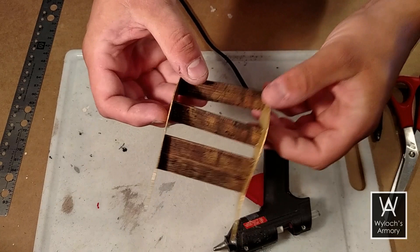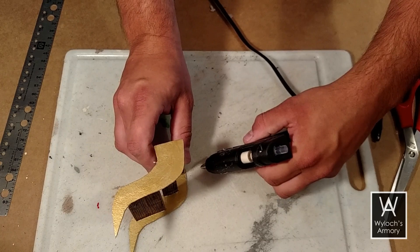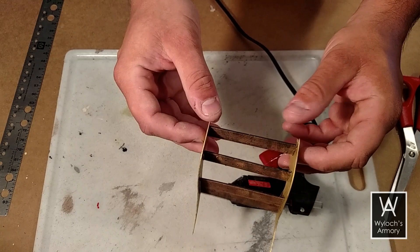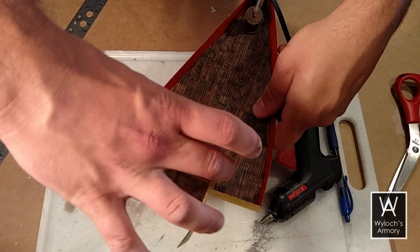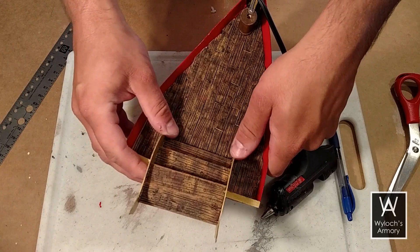Unfortunately, I had a camera malfunction, but this is self-explanatory. Hot glue the planks to the supports as you see here. Now take this whole assembly and hot glue it to the deck as far back as you can, making sure that it's centered.